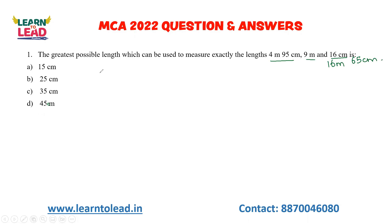So 4 m 95 cm becomes 495 cm, 9 m 16 cm becomes 916 cm, and 16 m 65 cm becomes 1665 cm. Now we apply the HCF method to these three values: 495, 916, and 1665.